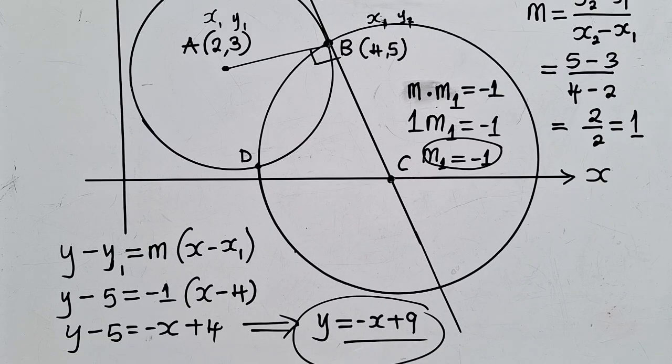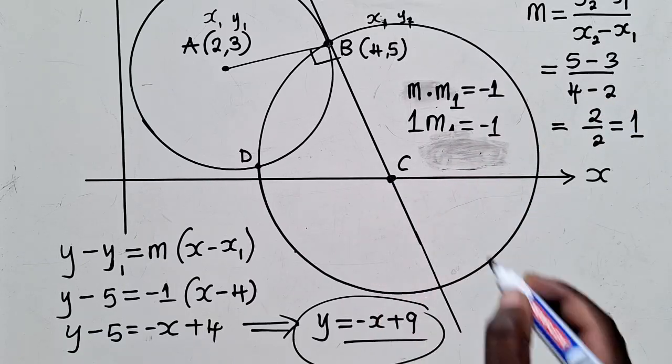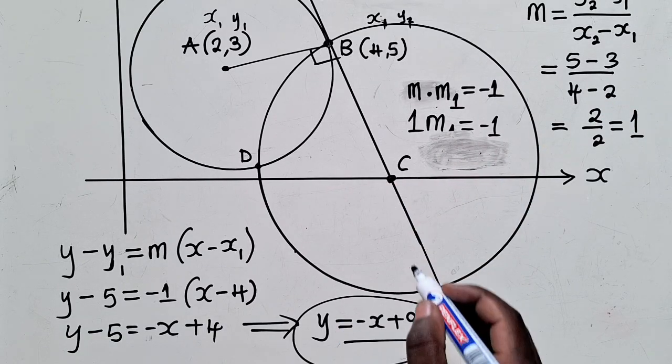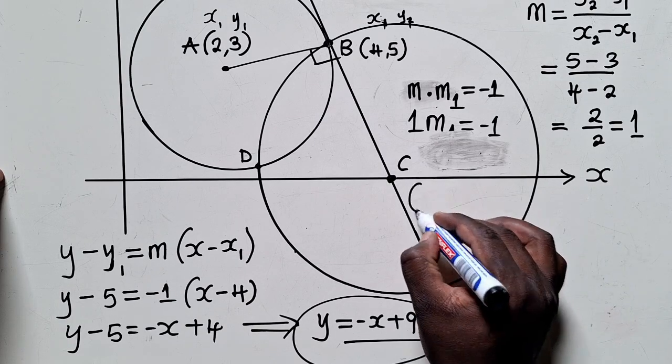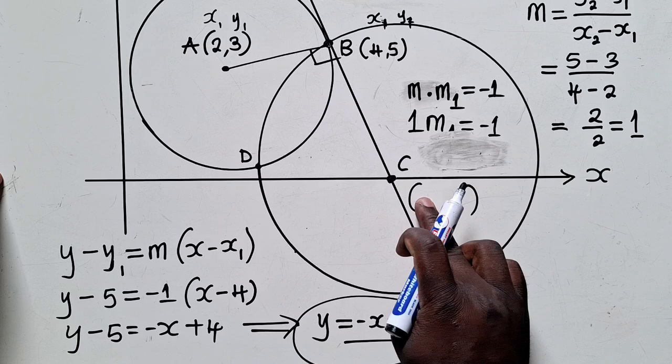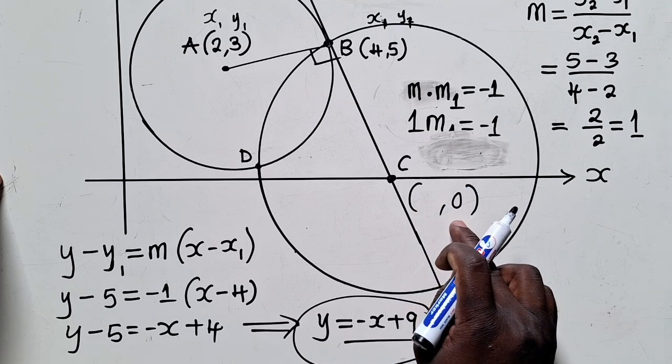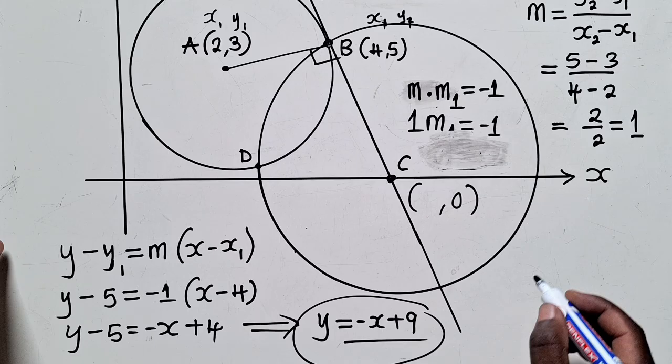Now, what if I said, find the coordinates of point C. To find the coordinates of point C, we're just going to say, here, the Y-coordinate will be equal to 0. The X-coordinate, we don't know, but the Y-coordinate is 0. This is called X-intercept. You're going to use this equation, Y is equal to negative X plus 9.